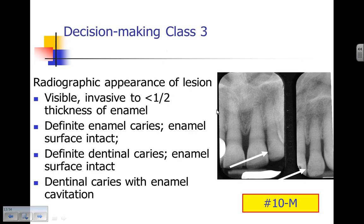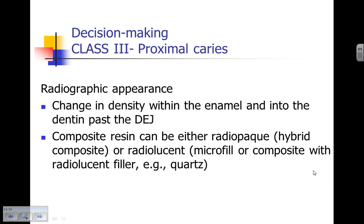Looking at the radiographic appearance of tooth number 10 on the mesial surface: is it visible? Is it invasive to greater than one-half the thickness of enamel? Is it enamel caries with the enamel surface intact? Is there dentinal caries with the enamel surface intact — that could be remineralized? Or is there dentinal caries with enamel cavitation, in which case we intervene to restore? Our decision-making for Class 3 is based upon both clinical and radiographic views. Unlike Class 2, which is typically diagnosed radiographically only, Class 3 is many times diagnosed clinically through transillumination.